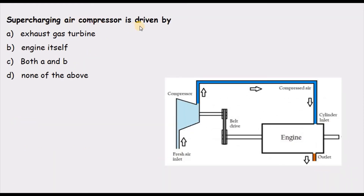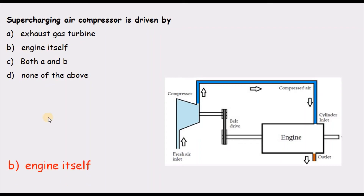Question 5 — the supercharging air compressor is driven by: the compressor is driven by the crankshaft of the engine itself. We are not using an exhaust gas turbine here, so the correct answer is B — the engine itself.